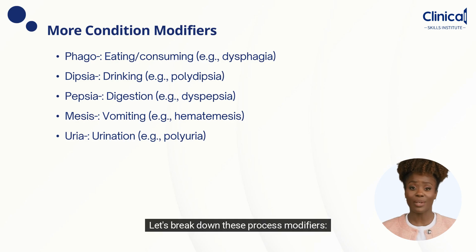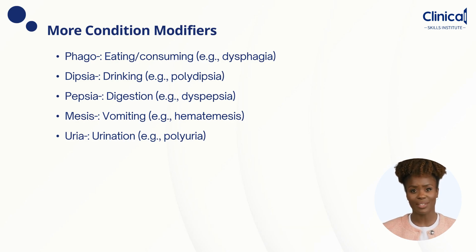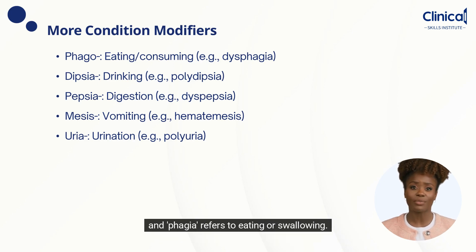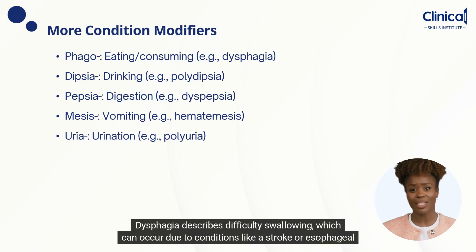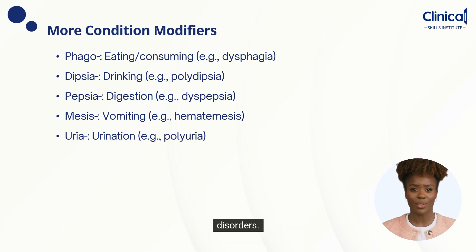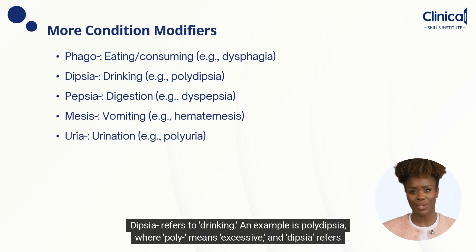Let's break down these process modifiers. Phago means eating or consuming. A common example is dysphagia, where dys means difficulty or problem, and phagia refers to eating or swallowing. Dysphagia describes difficulty swallowing, which can occur due to conditions like a stroke or esophageal disorders.